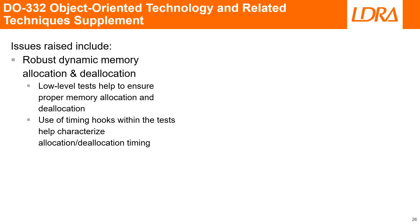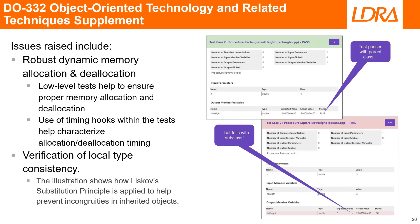DO-332 deals with object-oriented technologies. It describes concepts and key features and related techniques, discusses their impact on the planning, development and verification processes, and enumerates their vulnerabilities. Two standout objectives from the document are robust management of memory — the document highlights how low-level testing provides a mechanism to explore various allocation and deallocation scenarios to ensure that such vulnerabilities are avoided — and verification of local type consistency. This illustration shows how Liskov's substitution principle is applied to help prevent incongruities in inherited objects.